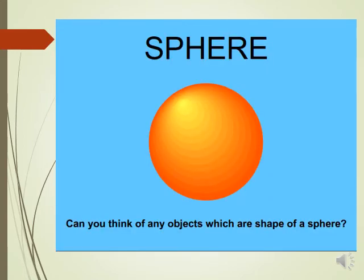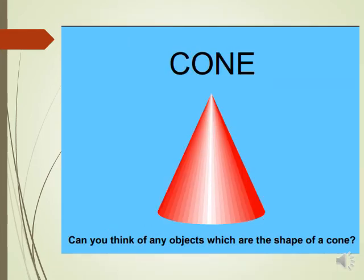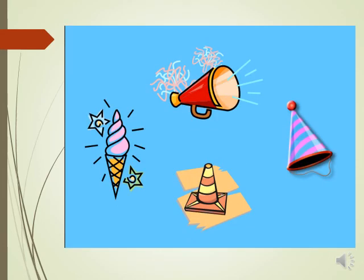Can you think of any objects that are the shape of a sphere? We have an apple, an orange, a globe, a soccer ball, and a tennis ball. And can you think of any objects that are the shape of a cone? Examples include Pringles, hairspray cans, water bottles, ice cream cones, and party hats.